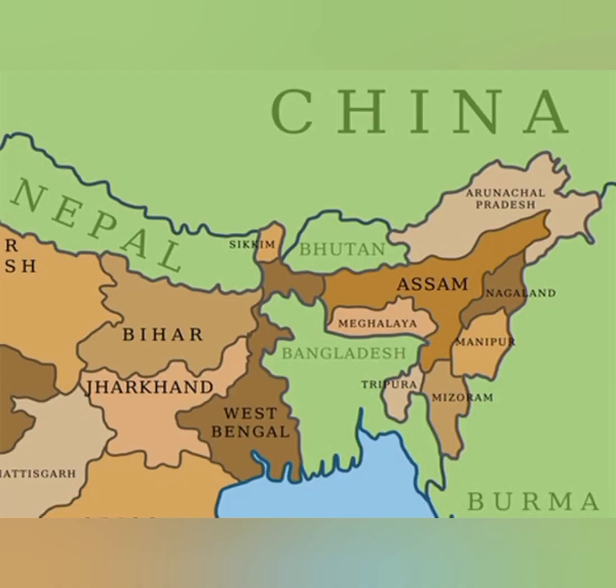The next question is: which of the following countries shares the longest land frontier with India? The options are China, Nepal, Pakistan, and Bangladesh. The correct answer is Bangladesh. It forms the longest land frontier with India, around 4,096 kilometers long. This international boundary is shared with Indian states including Mizoram, Tripura, Assam, Meghalaya, and West Bengal.